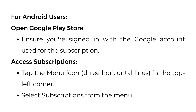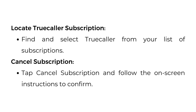For Android users, open Google Play Store. Ensure you're signed in with the Google account used for the subscription. To access Subscriptions, tap the menu icon — three horizontal lines in the top left corner — and select Subscriptions from the menu.